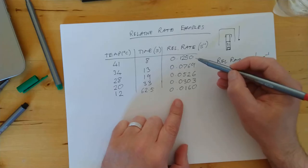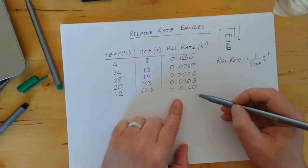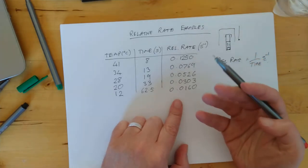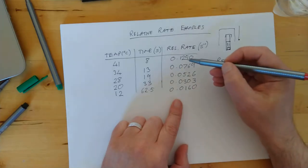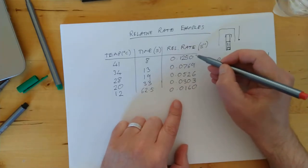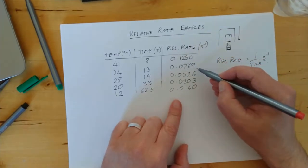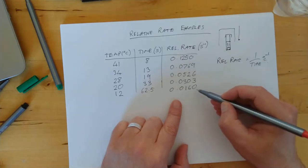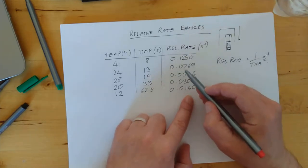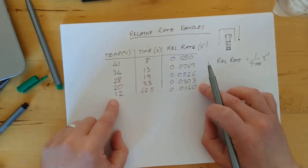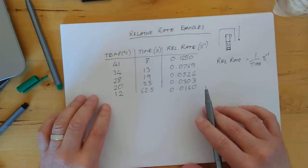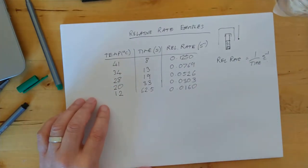For relative rate, and you notice that I've rounded them all to 4 significant figures. That's just for comparison purposes. So mentally, this is effectively the same as 1250, 769, 526, 303, 160. You can see that obviously they are decreasing with decreasing temperature. That's what you told me from National 5. However, there's a couple of other details that we need now.